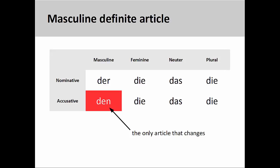We can see an important pattern here. The masculine definite article, Der, is the only article that changes from the nominative to the accusative. A rhyme I have always told my students to help them remember this change is: Der becomes Den, everything else stays the same.